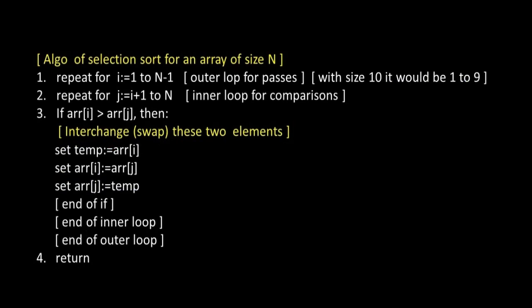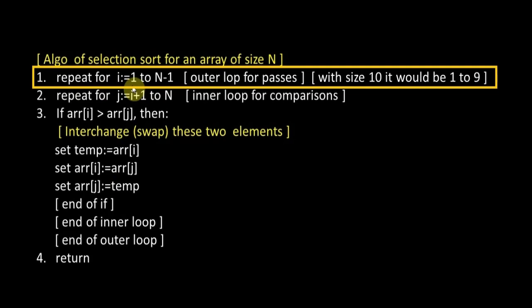This is our outer loop, which is used for the number of passes: for i = 1 to N-1. As you know, in Selection Sort the number of passes are N-1, where N is the size of the array. So if there had been an array size of 10, the loop would have been 1 to 9.